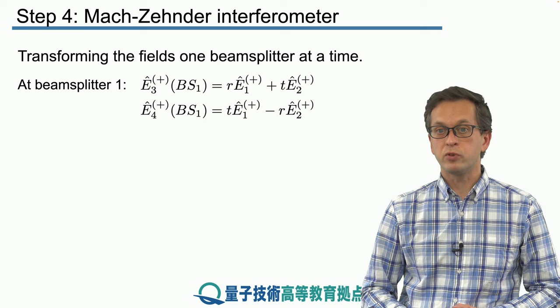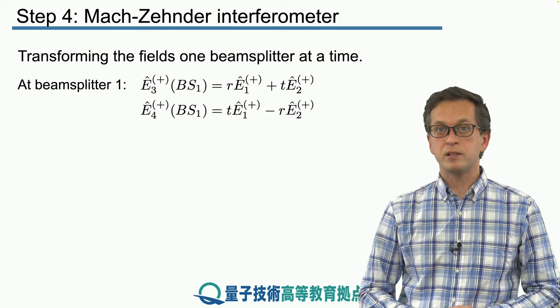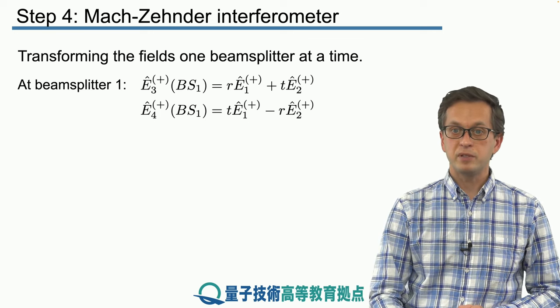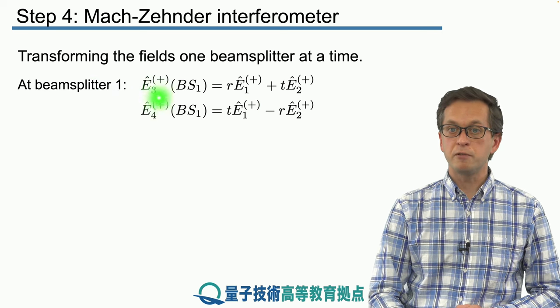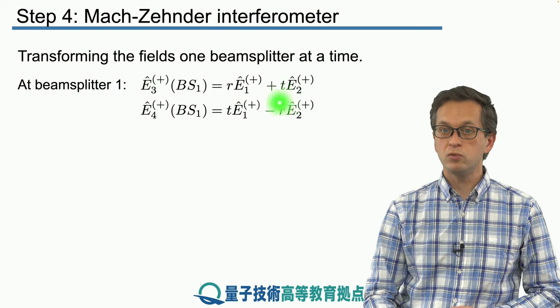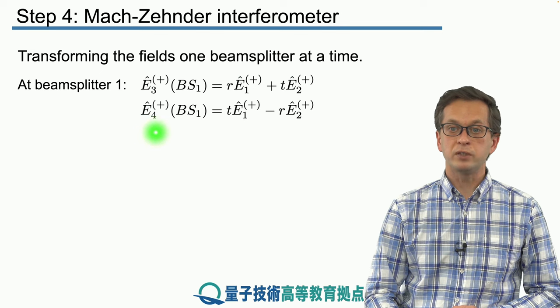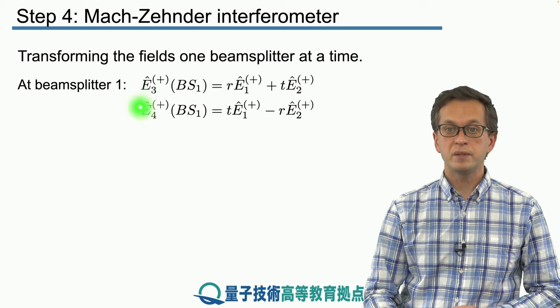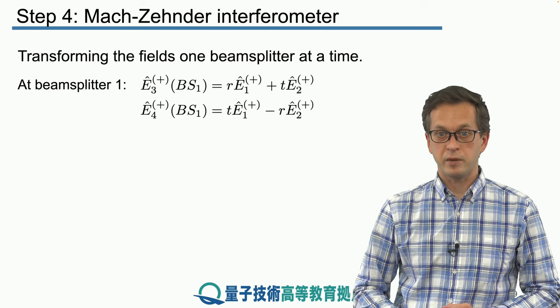We're just going to follow the usual transformations that we have seen in the previous steps. At beam splitter 1, we can write the output field E3 in terms of E1 and E2, and similarly for output field E4. This is the usual beam splitter transformation which we have seen in previous steps.